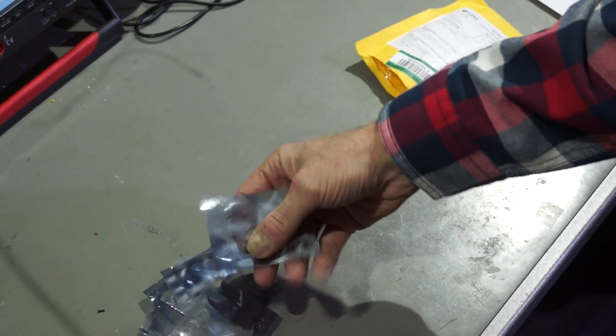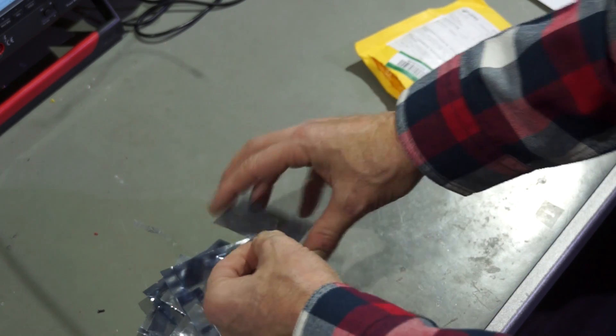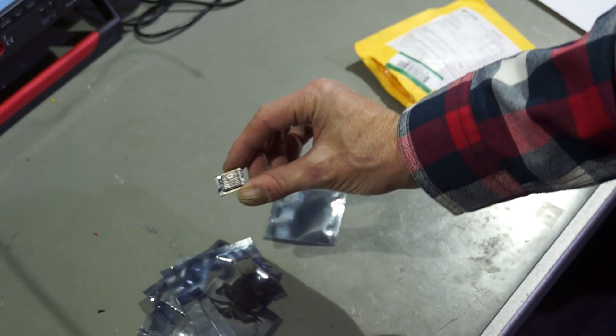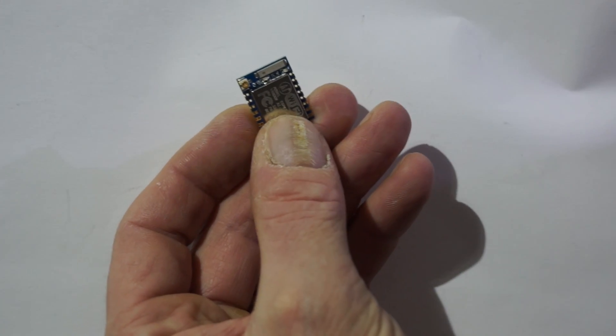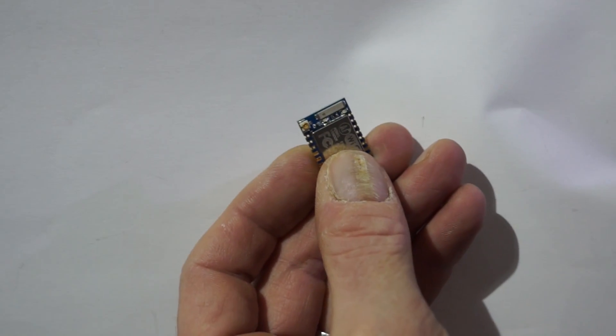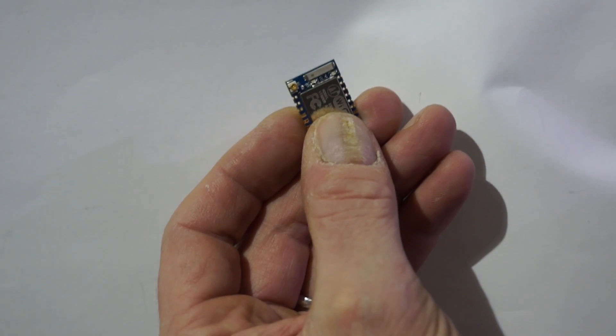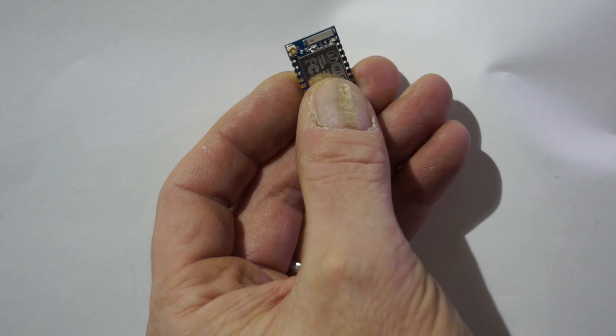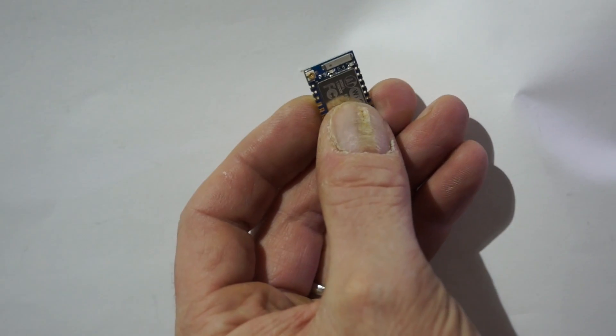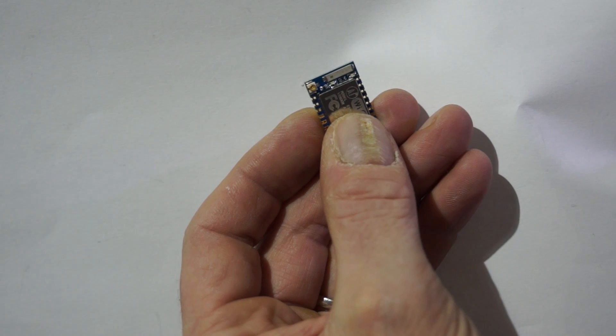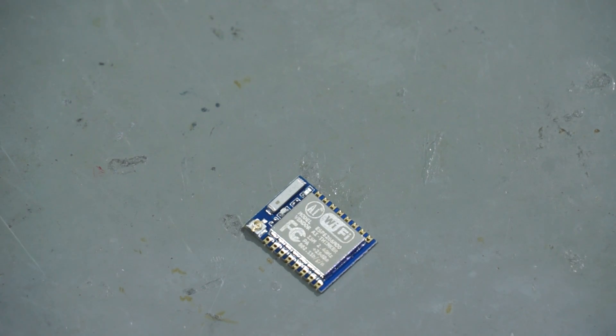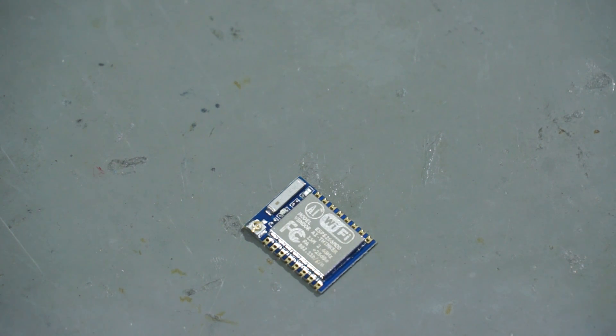These are another few ESP modules but this time not the ESP-12 but the ESP-07. The ESP-07 has the advantage that it has an antenna connector and I can do my tests with antenna with this product. The supplier promised that it has 4 MB of flash as the 12. I will check.